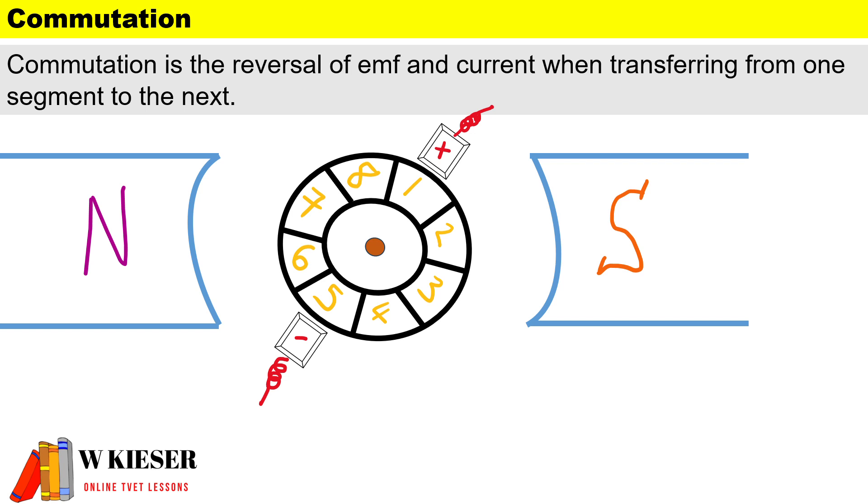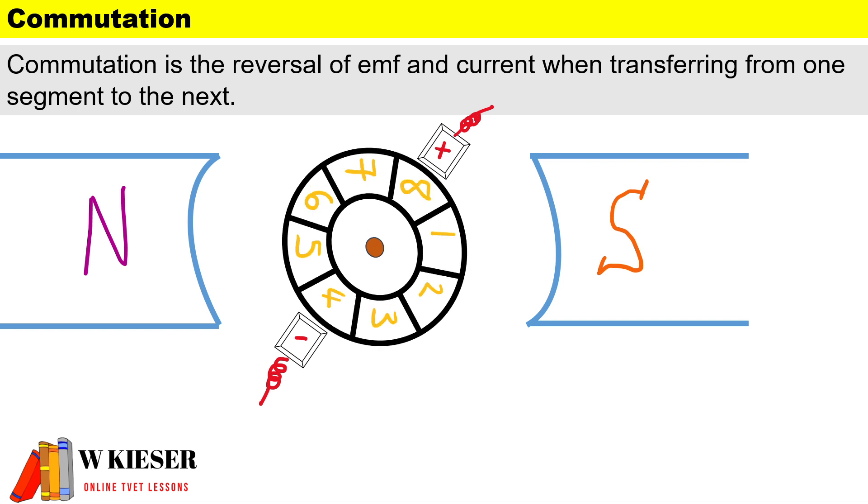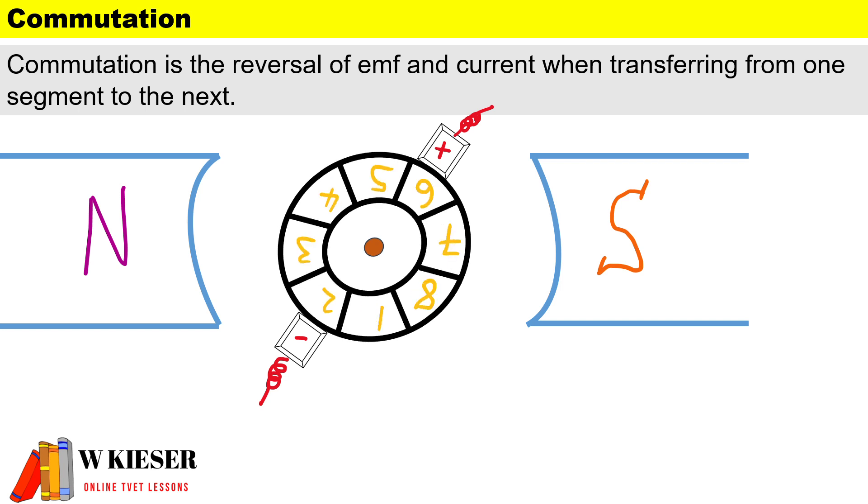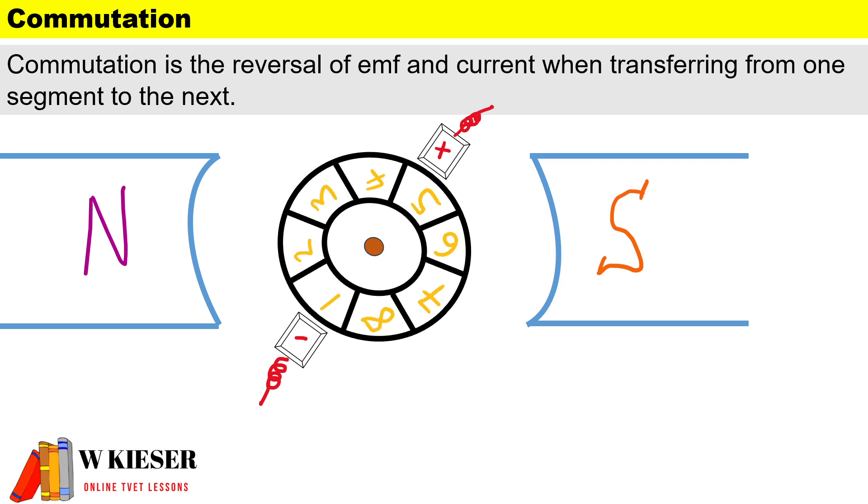If you look at my diagram, you'll see that currently segments one and five are making contact with the brushes. As the commutator turns, segments eight and four make contact, then segments seven and three, then six and two, and then back to segments five and one. As the commutator turns from one segment to the next, it causes commutation, which is the reversal of EMF and current.